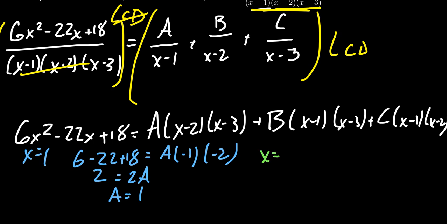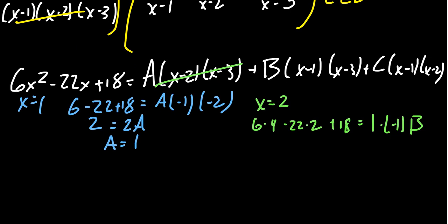That's the first value. The next value to use to annihilate, I'm going to use x equals 2. Notice when x equals 2, A will be annihilated and C will be annihilated. The left-hand side will look like 6 times 2 squared, which is 4, minus 22 times 2 plus 18. The right-hand side, we're going to get 2 minus 1, which is 1, then we're going to get 2 minus 3, which is negative 1, and then we get a B. Simplifying the left-hand side, this is the hardest part here. You get 6 times 4, which is 24. You get 22 times 2, which is 44, plus 18. The right-hand side should be negative B. You're going to get 24 minus 44, that's negative 20 plus 18, that gives me negative 2, which equals negative B. And so that then tells us that B equals 2.